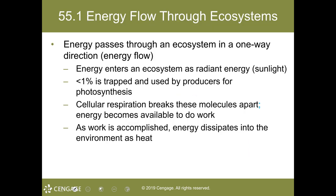Energy flow is the passage of energy in a one-way direction through an ecosystem. Energy enters an ecosystem as radiant energy called sunlight — that tiny portion of less than 1% of which reaches those producers to trap and use during photosynthesis. The energy, now in chemical form, is stored in the bonds of organic carbon-containing molecules such as glucose. When cellular respiration breaks down these molecules, the energy becomes available in the form of ATP (adenosine triphosphate) to do work. As the work is accomplished, energy escapes the organisms and dissipates into the environment as heat — that state of disorder — not to be used again. Ultimately, this heat energy radiates into space.